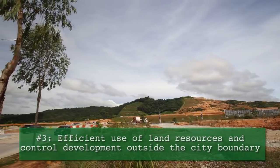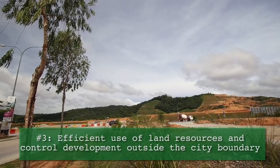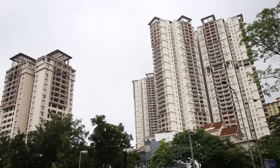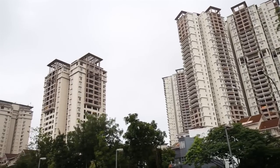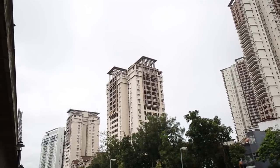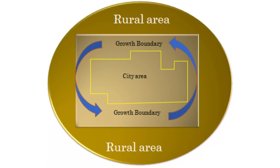Efficient use of land resources and control on development outside the city boundary. Single-story buildings interspersed with patches of undeveloped land waste precious land resources. Such development patterns also contribute to urban sprawl by creating more demand for development on greenfields on the outskirts of cities. Compact development, in contrast, uses land more efficiently by having high-rise buildings that can accommodate more people and by developing vacant land. Demarcation of city growth boundaries also helps promote compact development, thereby optimising the utilisation of available land within the boundary.